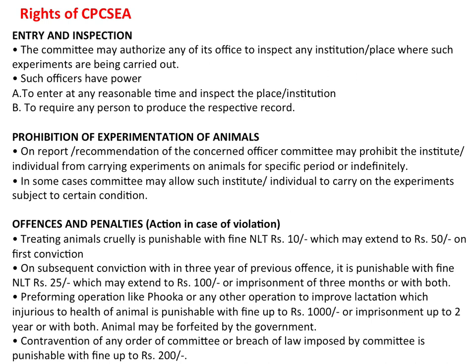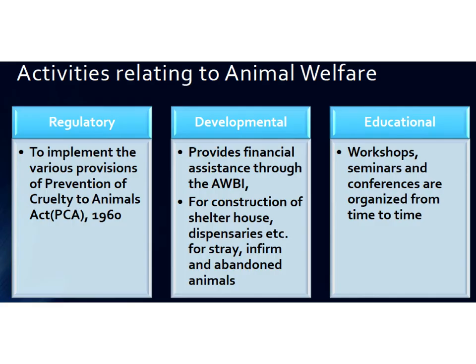CPCSEA has the right to enter and conduct inspections in any institute. It can prohibit experiments on animals in any institute, though in some cases the committee may allow experiments to carry on subject to certain conditions. It can take action in case of violation of these rules. Activities relating to animal welfare in India include regulatory bodies like PCA, developmental bodies like AWBI, and educational activities through workshops and seminars by the institutional ethics committee.